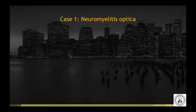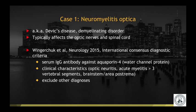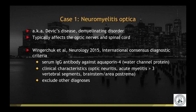These are cases of neuromyelitis optica, NMO, also known as Devic disease. It is a demyelinating disorder that typically affects the optic nerves and the spinal cord. International consensus diagnostic criteria include a serum IgG antibody against aquaporin-4, as well as key clinical characteristics including optic neuritis, acute myelitis with cord lesions that are longitudinal across multiple vertebral segments, and involvement of the brainstem and area postrema. It also involves excluding other diagnoses.